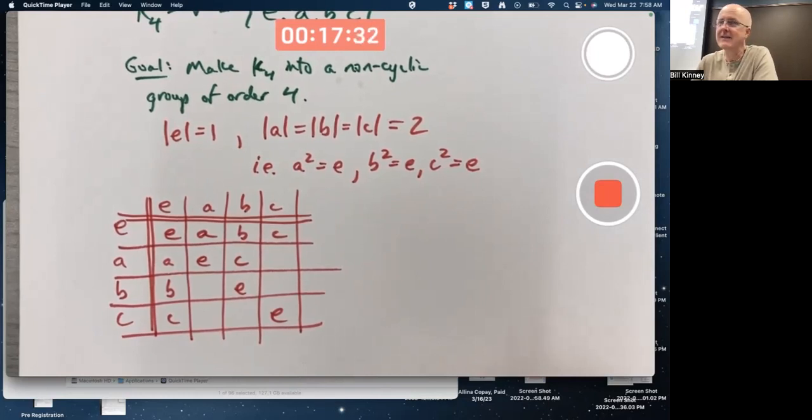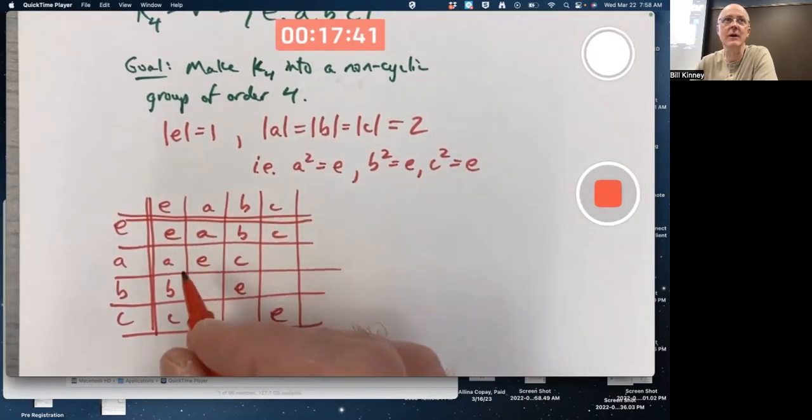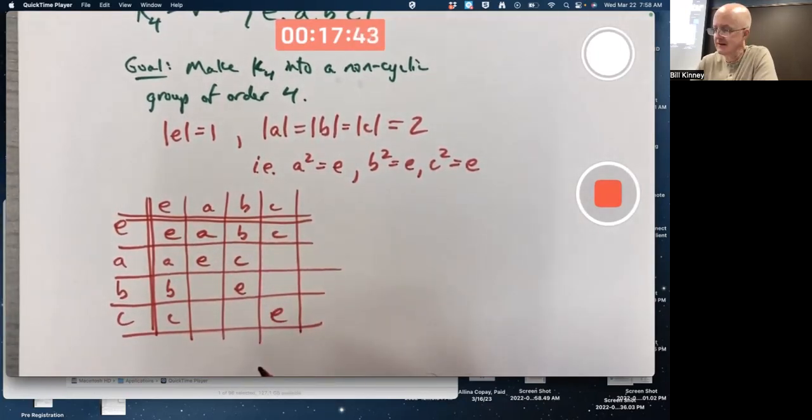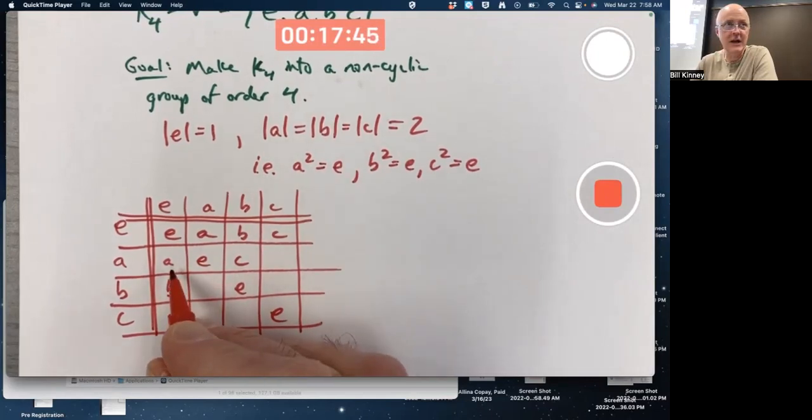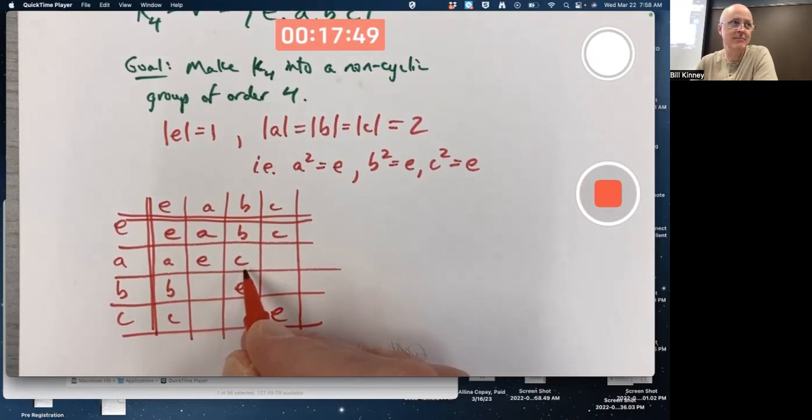Well, it is a property of group Cayley tables that each element of the group in the main body of the table will occur exactly once. A has already occurred. E has already occurred. So it's either got to be B or C there.